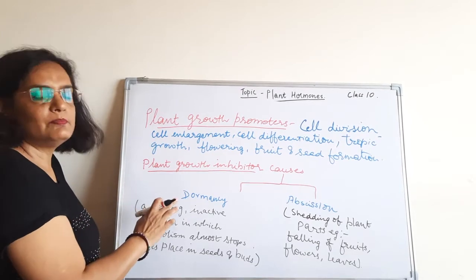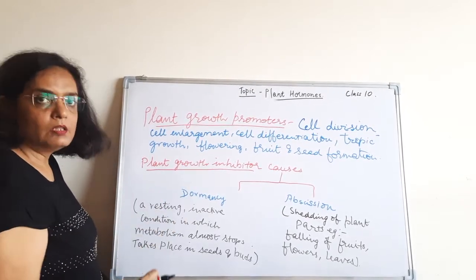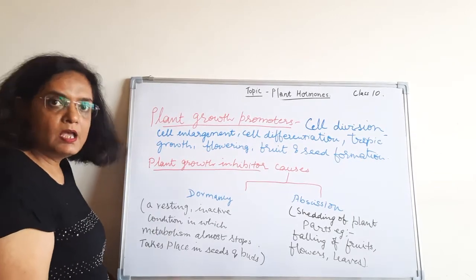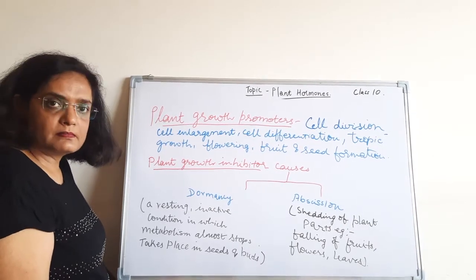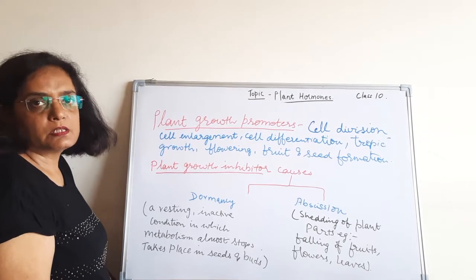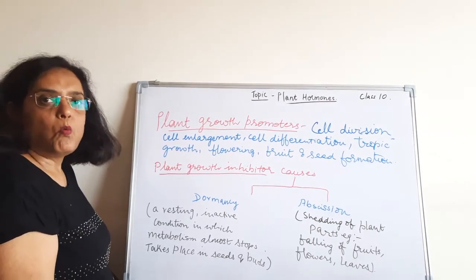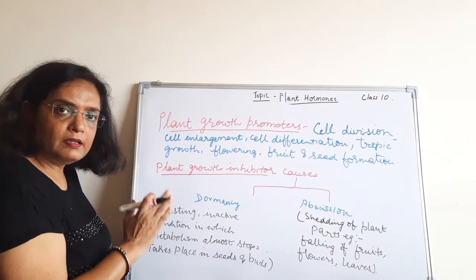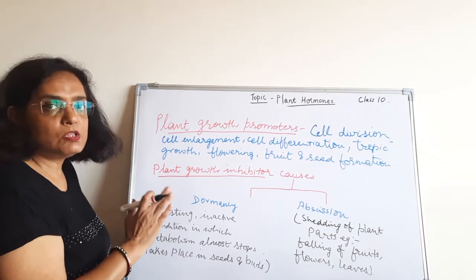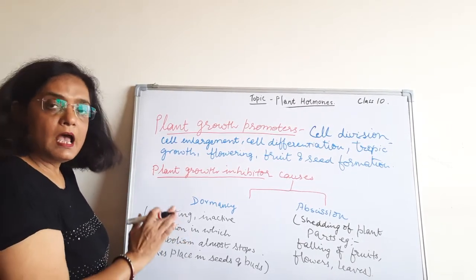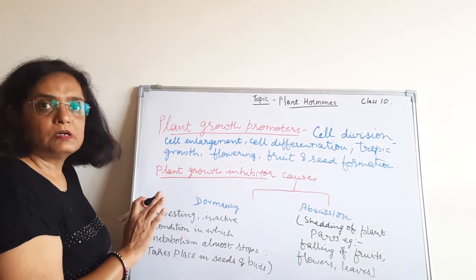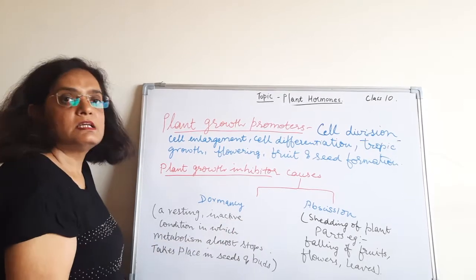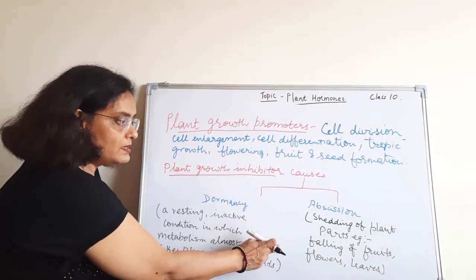Whereas plant growth inhibitors cause dormancy and abscission. Dormancy is the resting, inactive condition in which metabolism almost stops. It takes place in seeds and in buds. When favourable conditions arise — that is, the presence of moisture, warmth, and hormone — the seed will germinate into a seedling, and the bud will break its dormancy and grow into a flower, leaf, or stem depending upon its position in the plant. Abscission is the shedding of plant parts, meaning the falling of flowers, fruits, and leaves.